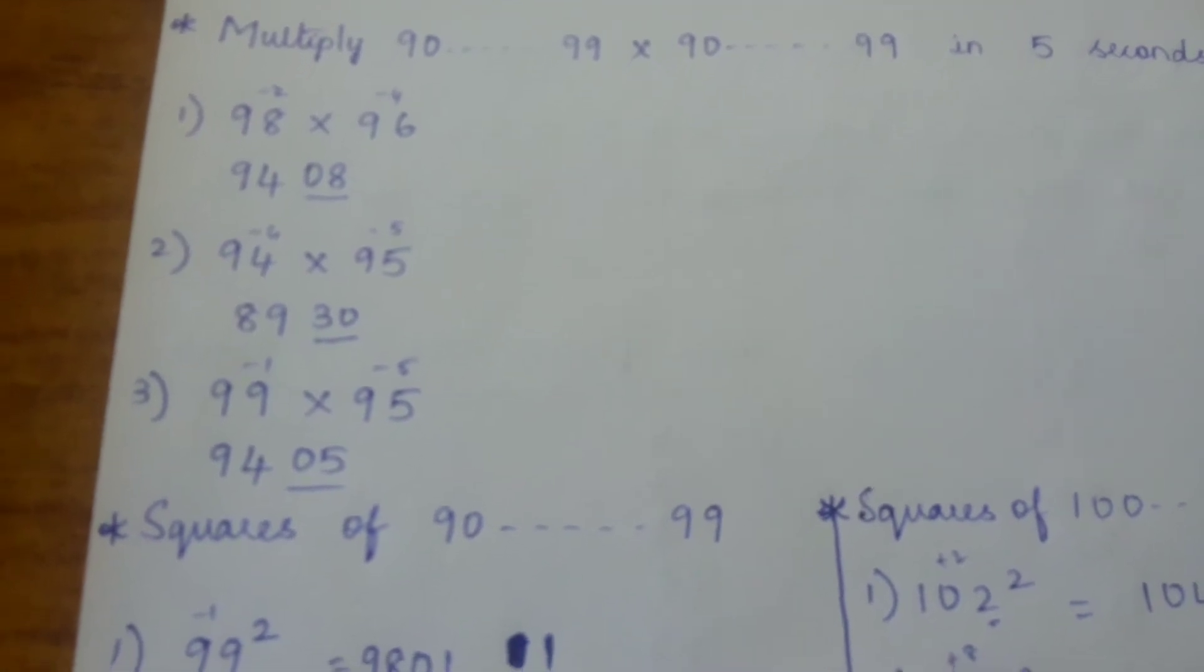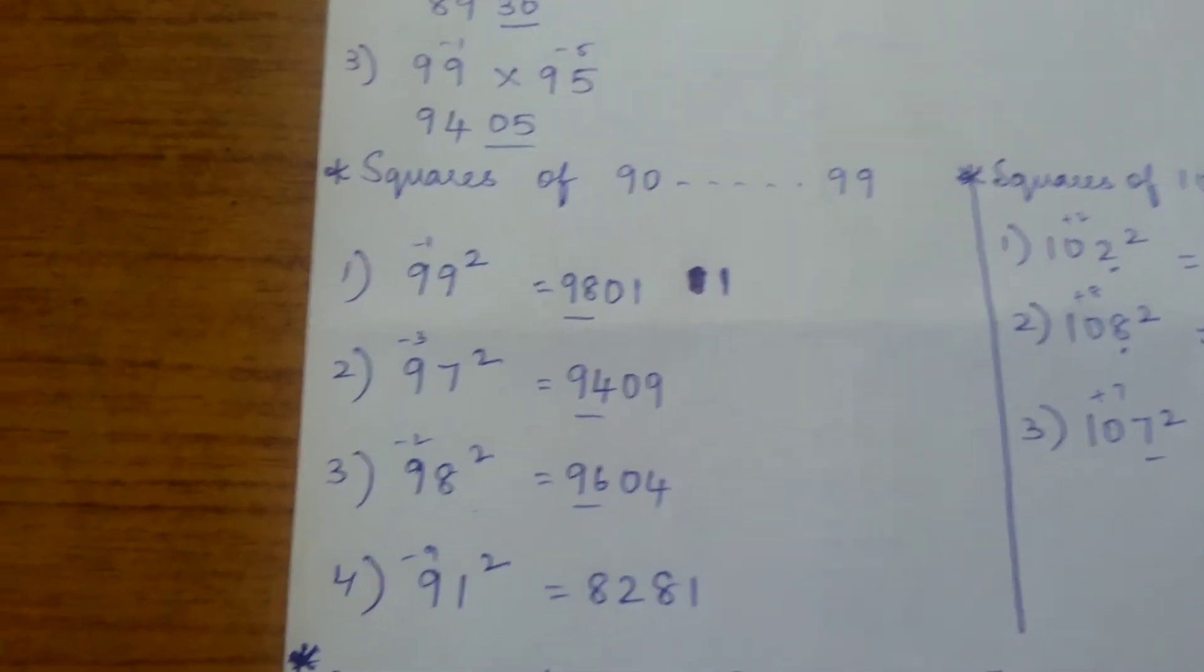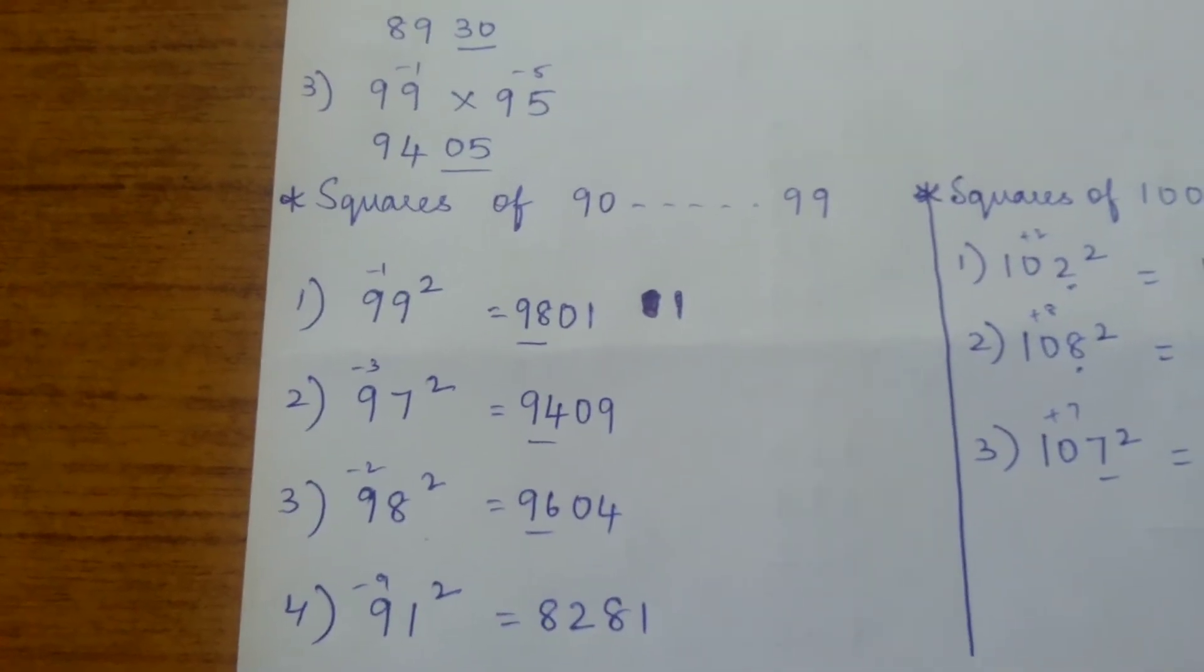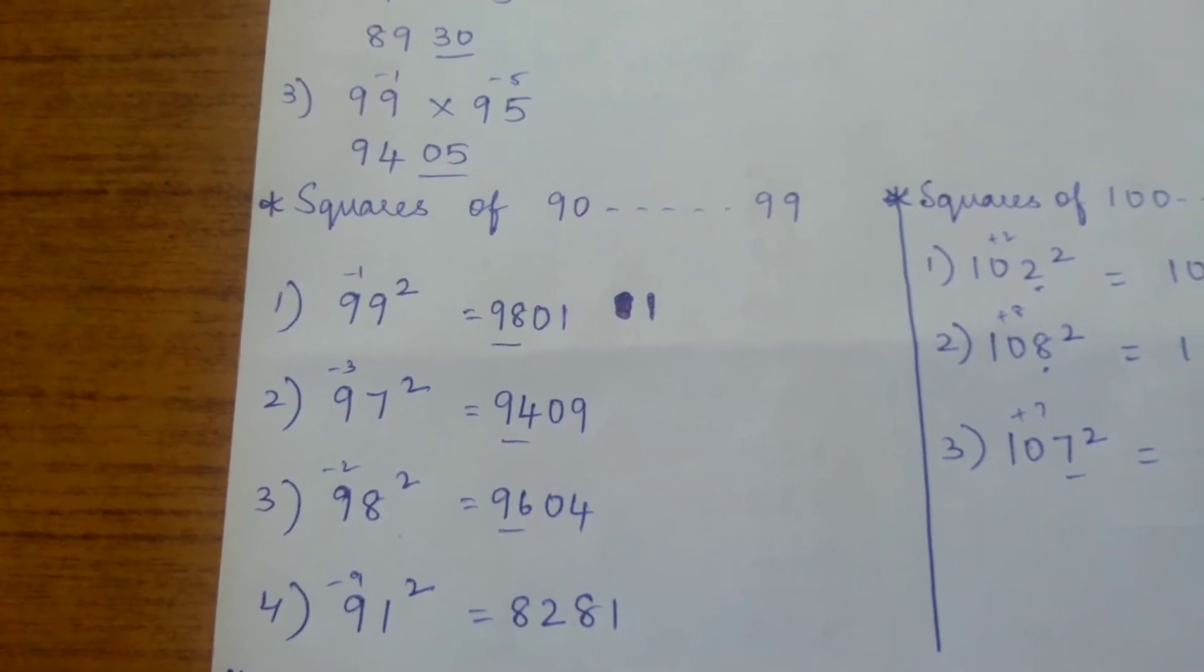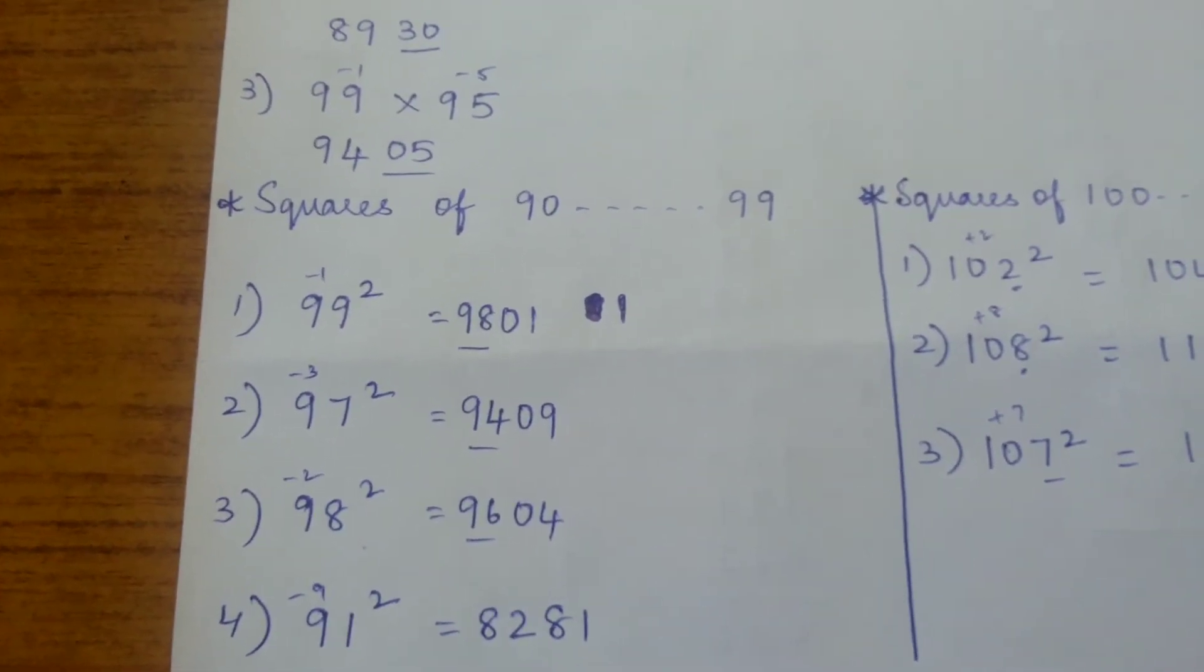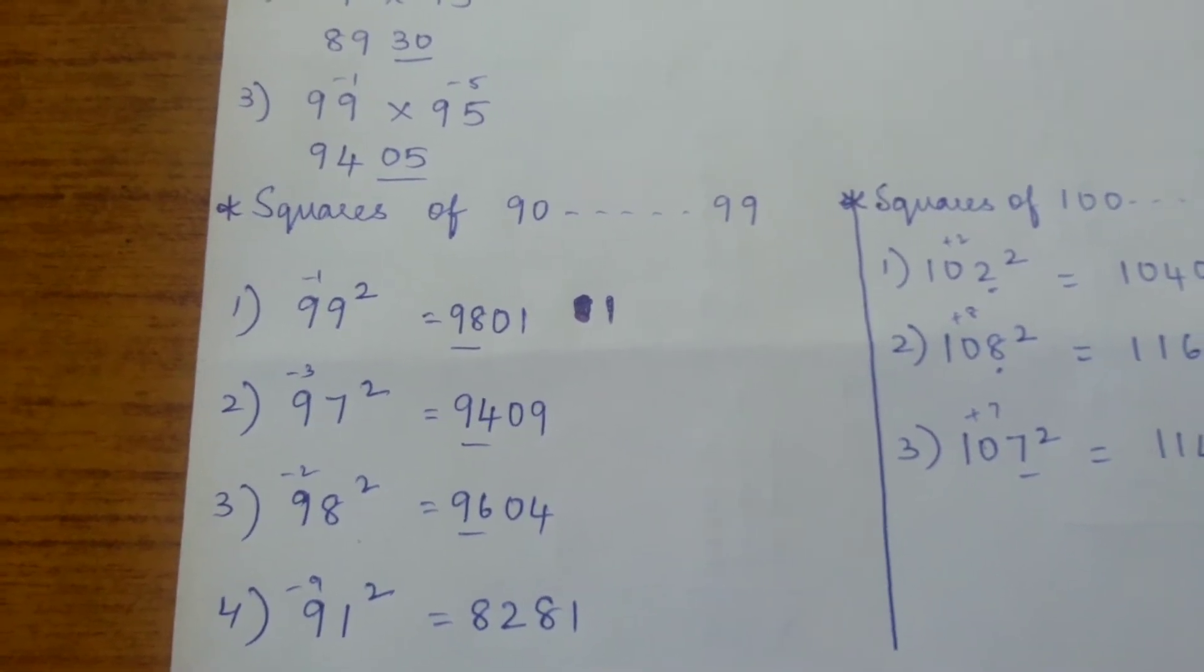Now squares of 90 to 99. 99 squared is 1 less than 100, so the last two digits will be 1 squared, which is 01. 97 squared is 3 less than 100, so the last two digits will be 09 (3 squared). 98 squared is 2 less than 100, so the last two digits will be 04.